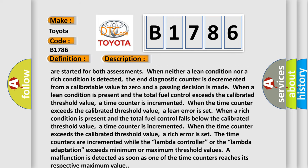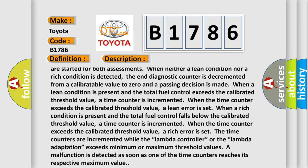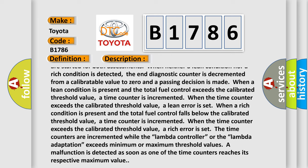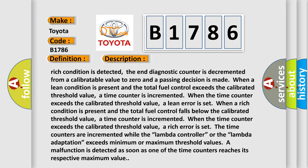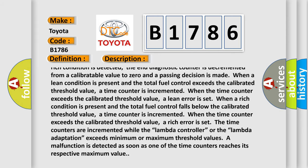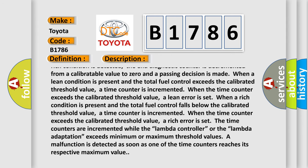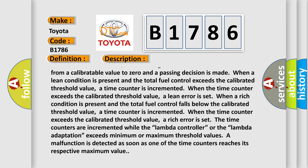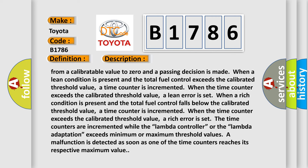A time counter is incremented when the time counter exceeds the calibrated threshold value. A lean error is set when a rich condition is present and the total fuel control falls below the calibrated threshold value. A time counter is incremented when the time counter exceeds the calibrated threshold value, a rich error is set.